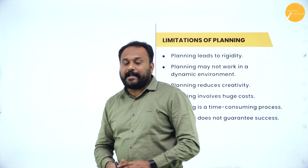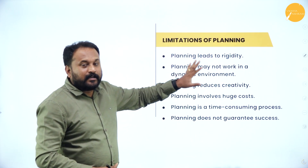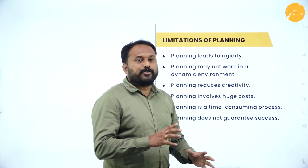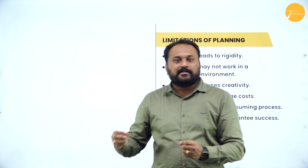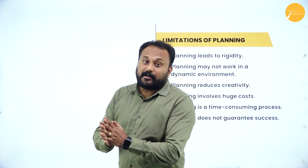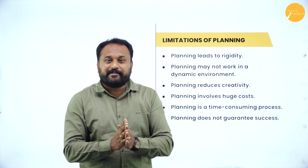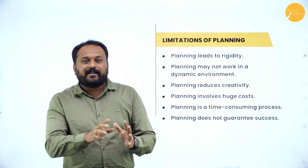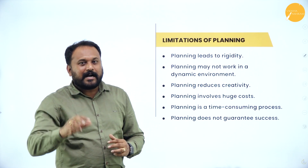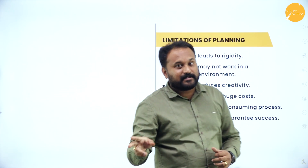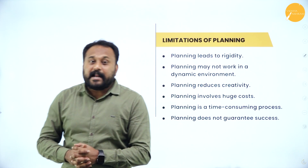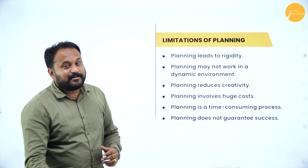Now we go with the limitations of planning. Whatever you plan in life — whether it's finance, friends, family, or any close ones — whenever you plan something, the first limitation is that all plans will not lead to success. You cannot convert all plans into 100% success. That is the ultimate limitation of planning. Also, planning is rigid — planning is not flexible, it is very rigid. Next, planning may not work in a dynamic environment — though you have done proper planning, you cannot control the macro environment.